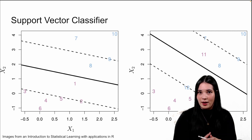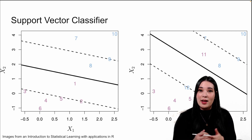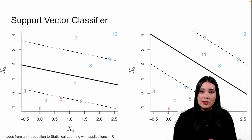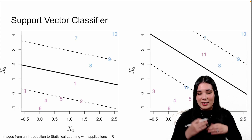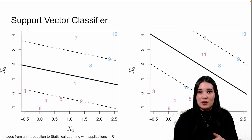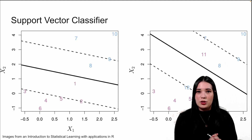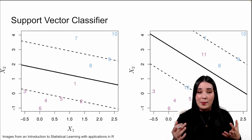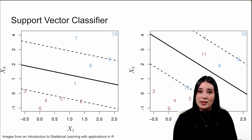In come the support vector classifier. Using slack variables, the support vector classifier allows data points to be inside the margin instead of just on it, or even be on the incorrect side of the hyperplane. This allows us some more flexibility to use a hyperplane to classify groups that are not linearly separable.